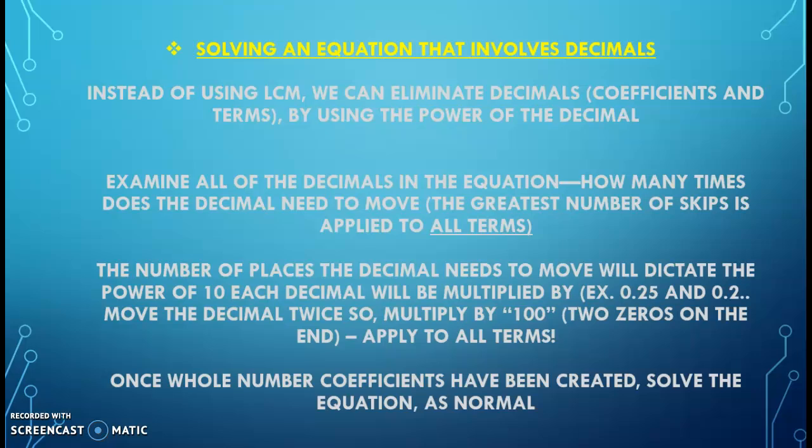The number of places that the decimal needs to move will dictate the power of 10 that each decimal will be multiplied. So, for example, in the decimal 0.25 and 0.2, of those two, the greatest number of moves that needs to be made is 2. Therefore, I'm going to move both of them, all of the terms, by two decimal places. Once the whole number coefficients have been created, you're going to solve the equation as normal.